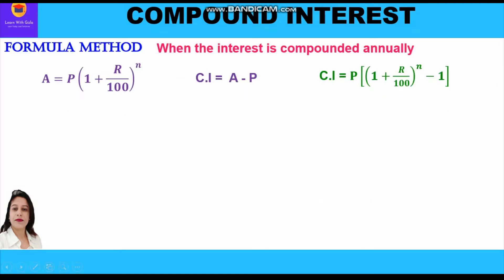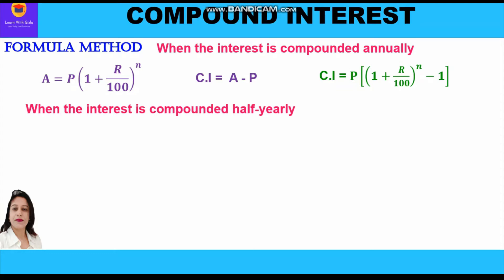First, let us revise the formula. When interest is compounded annually, the amount formula is: Amount = P × (1 + r/100)^n, and compound interest is the difference between amount and principal. We also have the direct formula: CI = P × [(1 + r/100)^n − 1].